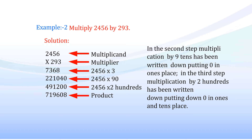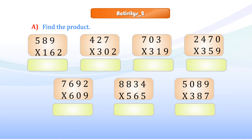Activity 2A — Find the product: 589 × 162; 427 × 302; 703 × 319; 2,470 × 359; 7,692 × 609; 8,834 × 565; 5,089 × 387.